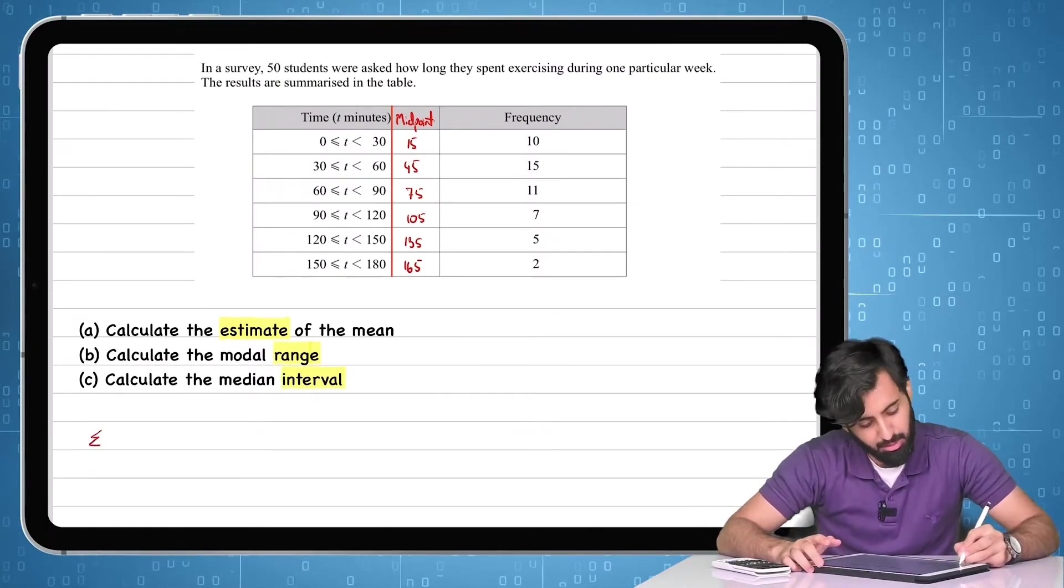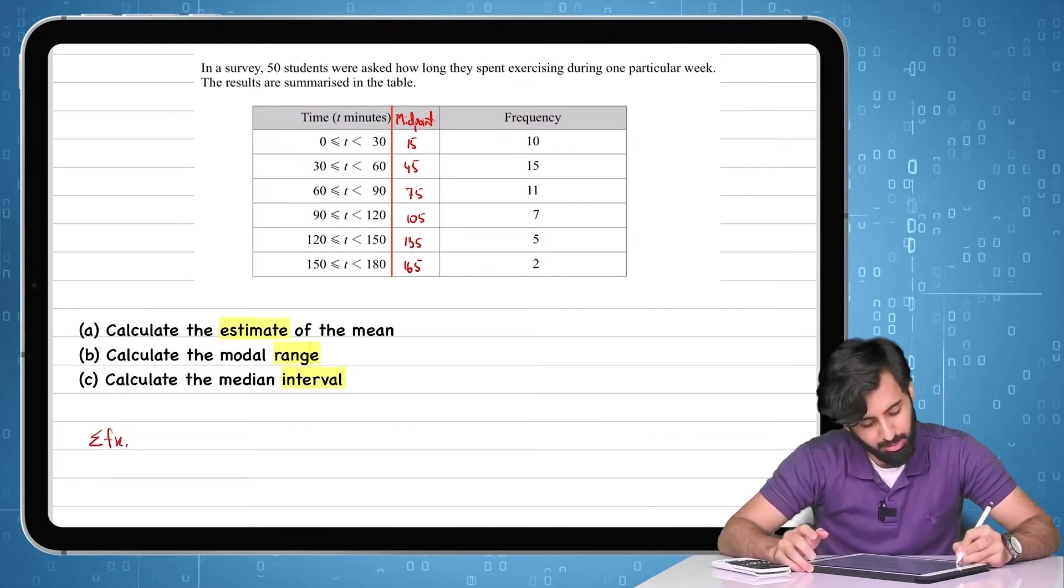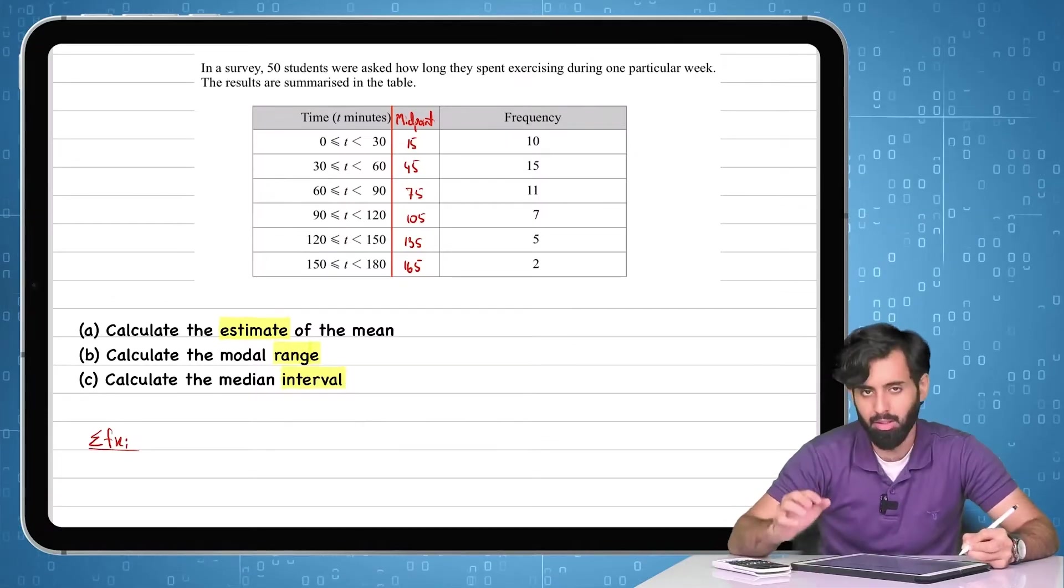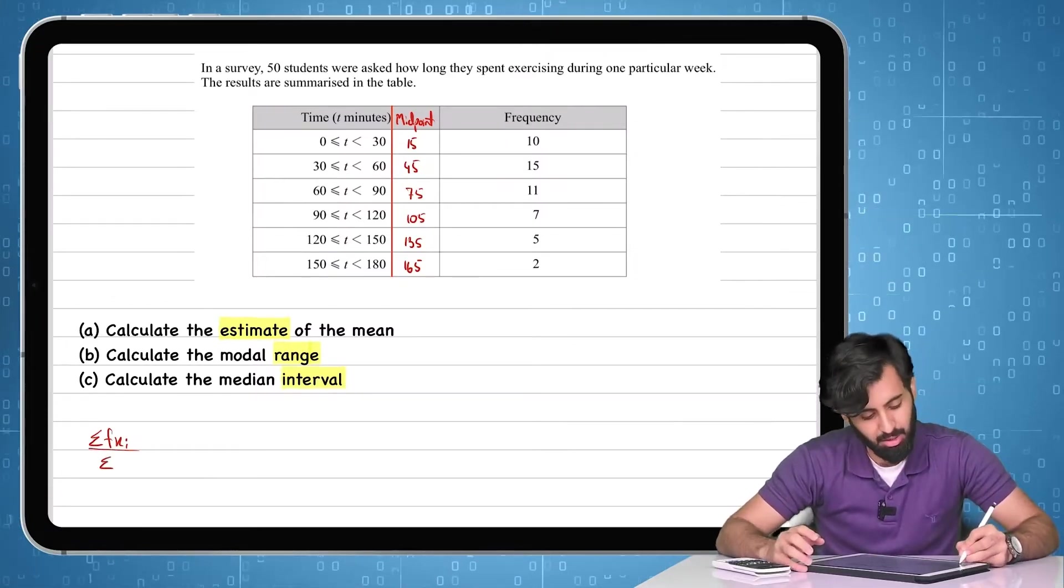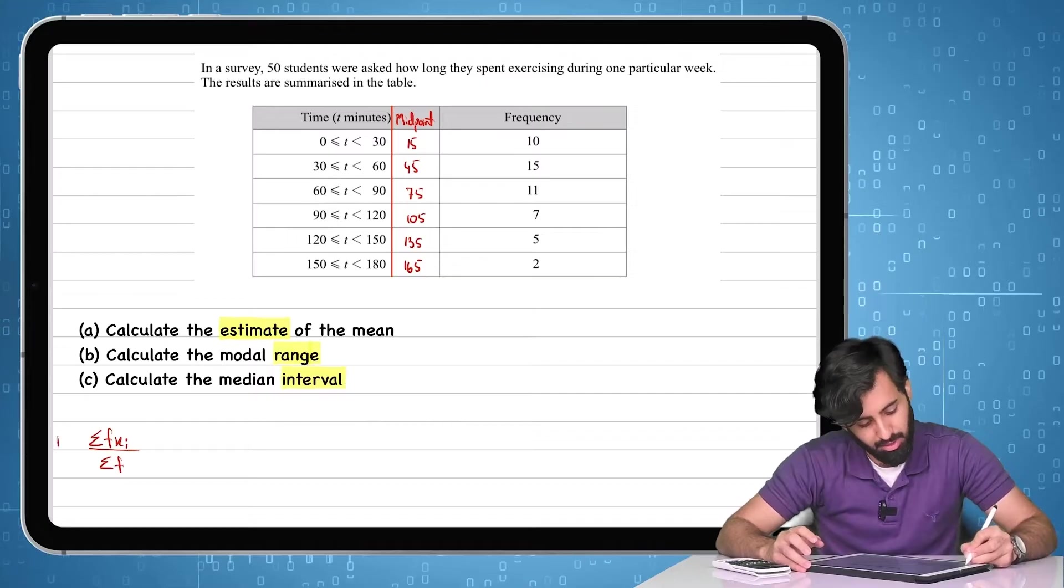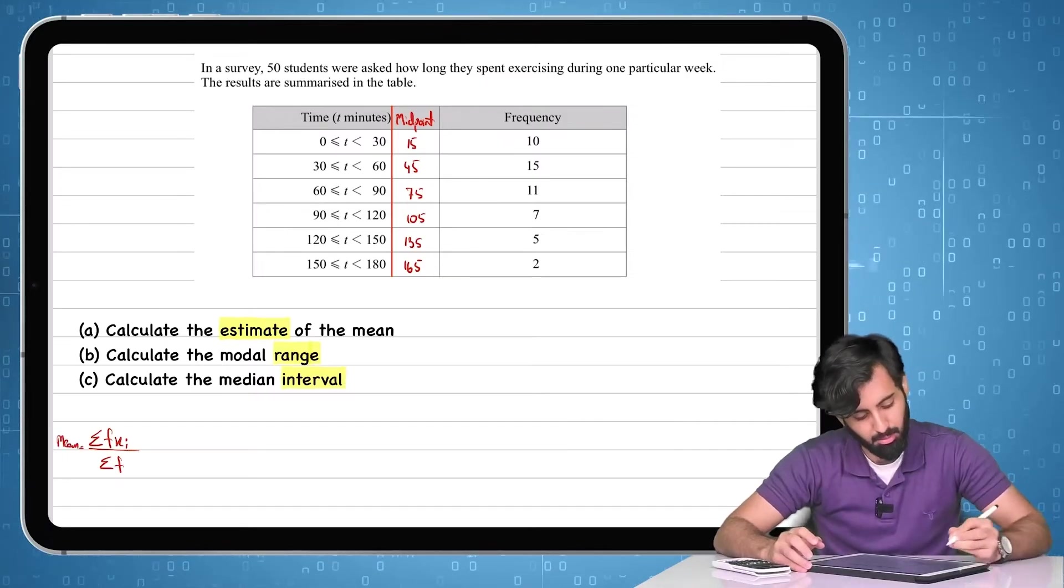So now when I'm calculating the mean, I'll use the same formula sigma fx. But just to distinguish, I'll put an xi here, which means that xi is the midpoint of every interval. So this right here is going to give me the mean.